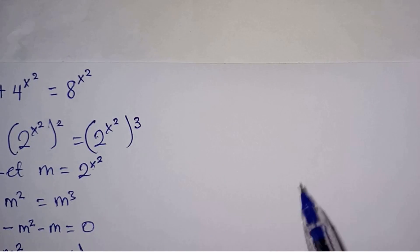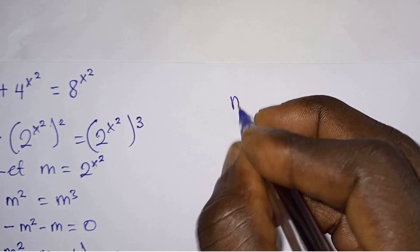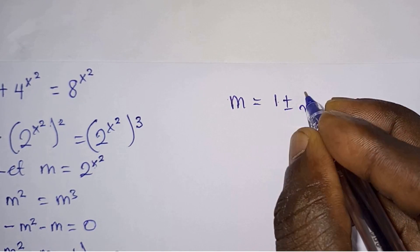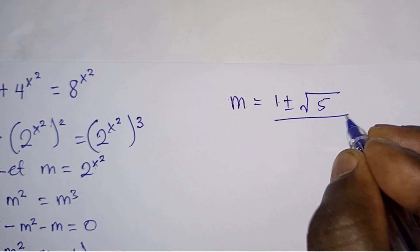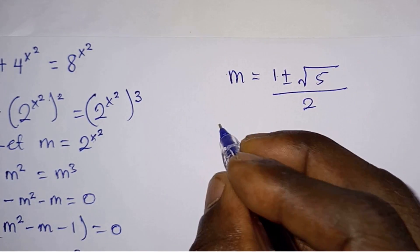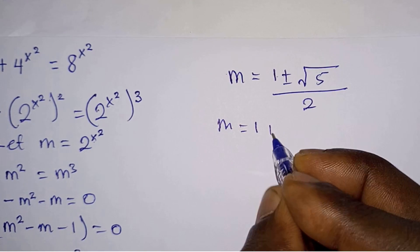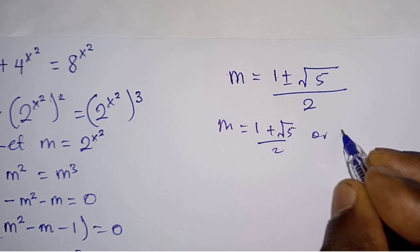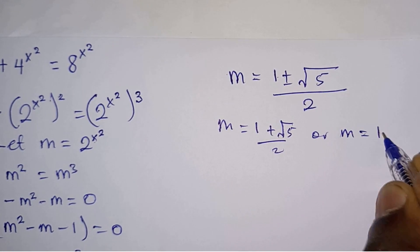So in everything we will get m = (1 ± √5) / 2. So what does it mean? It means that m is either (1 + √5) / 2 or m is (1 - √5) / 2.